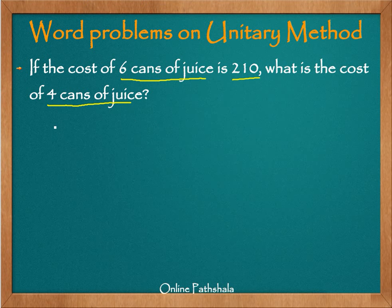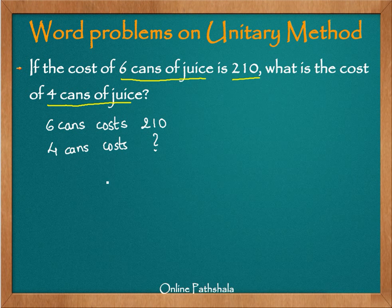We are given that six cans of juice cost 210, and we are asked how much four cans cost. We have to find out the value of four cans of juice, but we don't know what it is. So what we will do is find out the value of one can of juice, and then multiply it by four to get the cost of four cans.